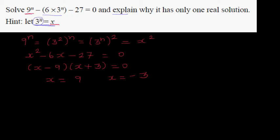Now what is x? Well, we know x is 3^n. So we can say 3^n = 9. So we can say 3^n = 3^2. That means n = 2. Comparing both sides, the bases are the same, so we can compare the indices.